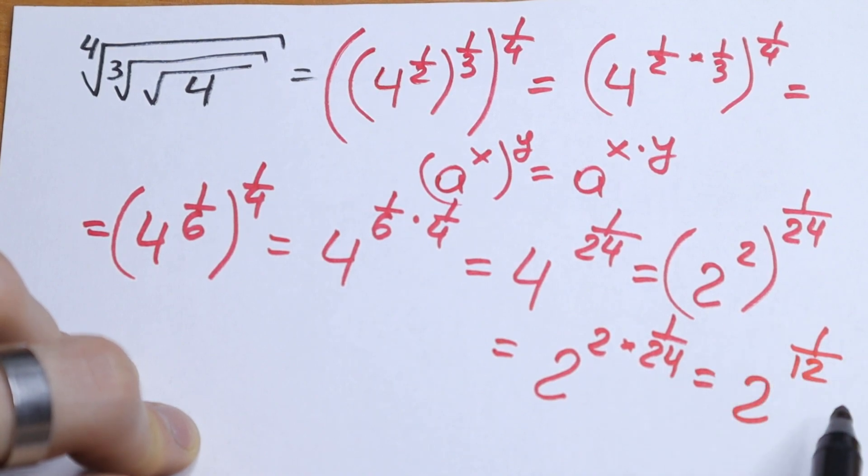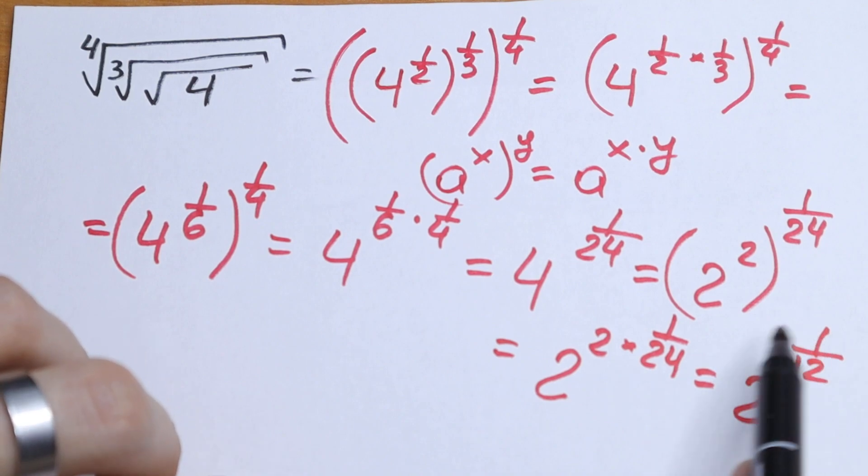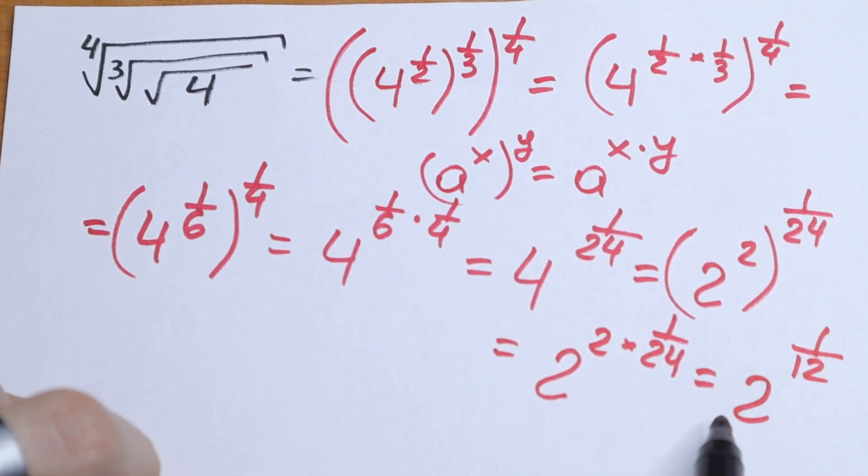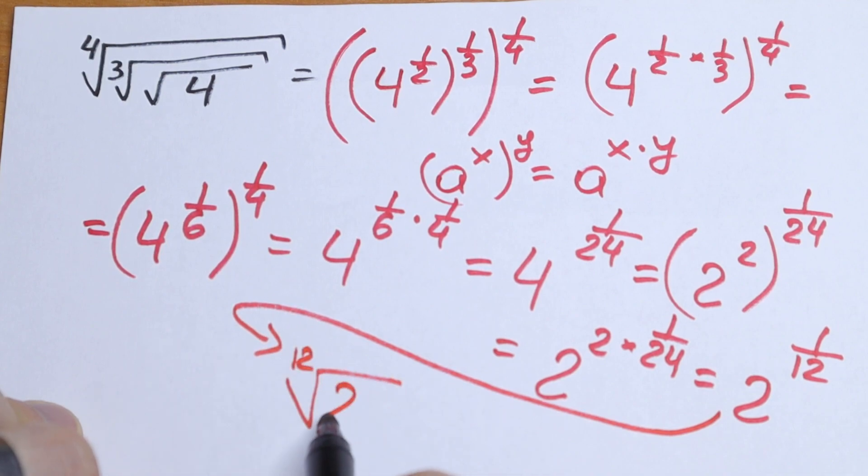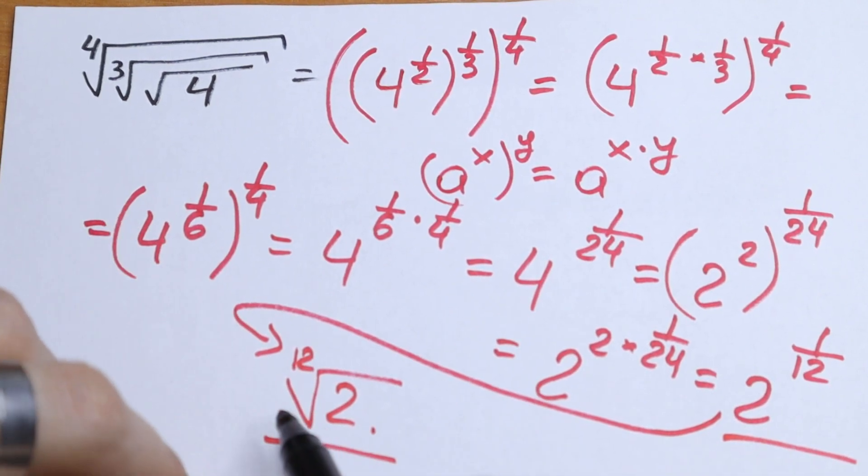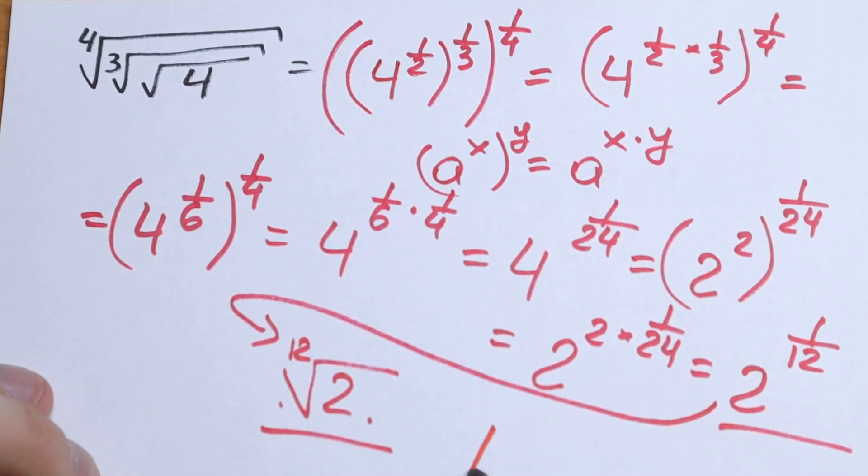This will be our answer. And moreover, if you don't have this option in your answer, you can rewrite this 2 to the power one over twelve as twelfth root of 2. And this will be the same answer, but in another way of expressing these answers. So, this will be our answer: twelfth root of 2.